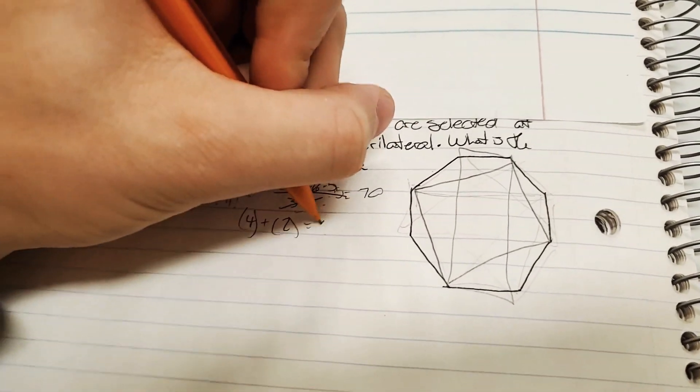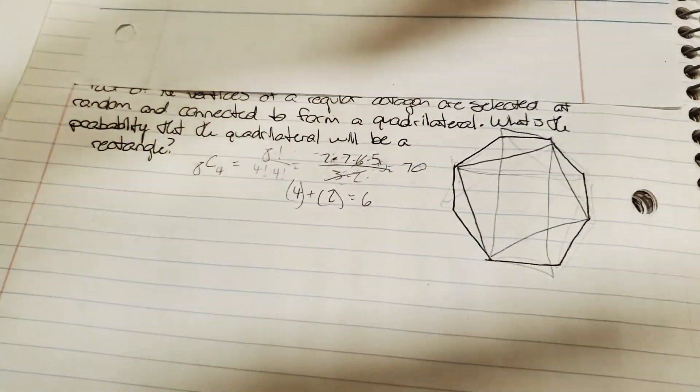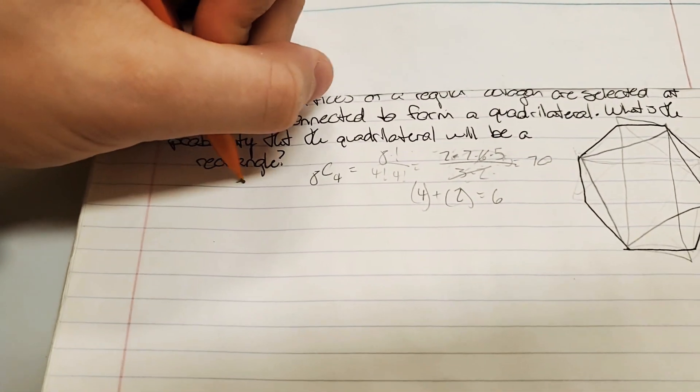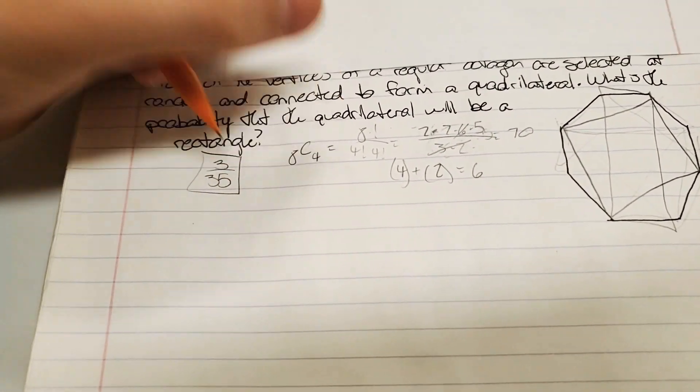So, you can see that there are six ways that work over the seventy total ways. And that can be simplified into three over thirty-five.